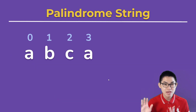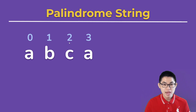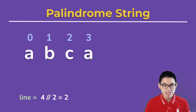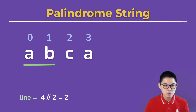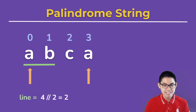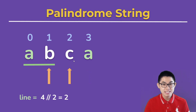Now let's take a look at another example: 'ABCA'. Again, we have the indexes. The line is 2 because there are four letters and we floor divide by 2 to get 2. We put the two arrows at the beginning and the end. A is the same as A, but B is not the same as C — so this tells us that this is not a palindrome.